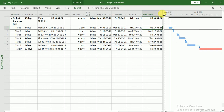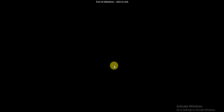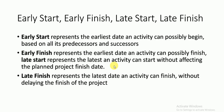So these four dates are important. Let's move into the PPT and I will explain the definitions. Early Start represents the earliest date an activity can possibly begin. Early Finish represents the earliest date an activity can possibly finish. Late Start represents the latest date an activity can start without affecting the planned project finish date. Late Finish represents the latest date an activity can finish without delaying the finish of the project.